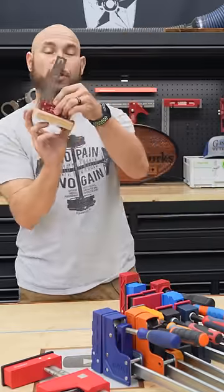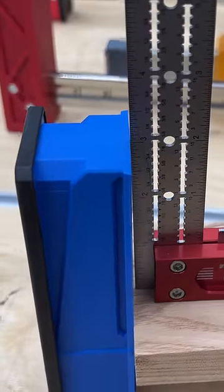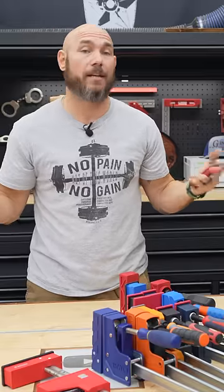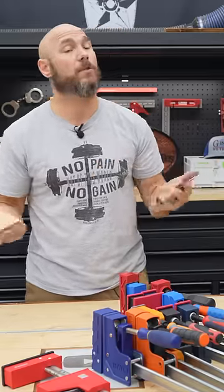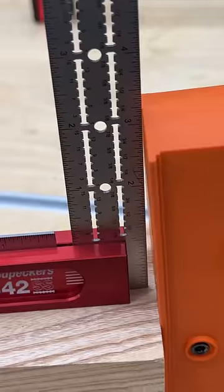I cut this block just long enough that my square would sit on it so that I could check the deflection of the jaws themselves and try to eliminate that bar deflection to see which one's jaws were actually going out of parallel.